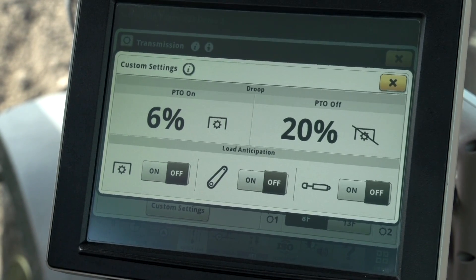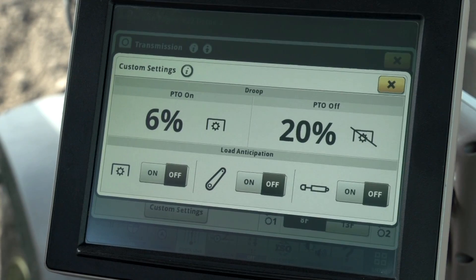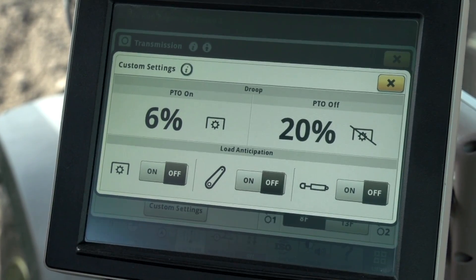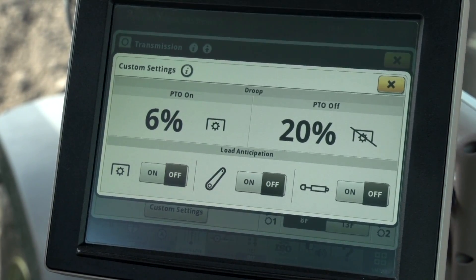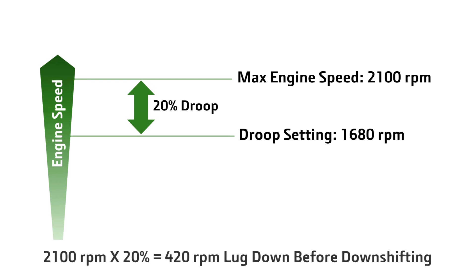The reason why is because the droop setting is based on the maximum allowed engine speed. For example, I have a PTO off droop setting of 20%. When field cruise is turned off, the droop setting is 20% of 2100 RPM, or about 420 RPM. This means under full load the tractor will lug down about 420 RPM before it begins to downshift.